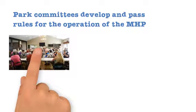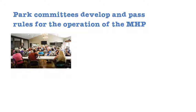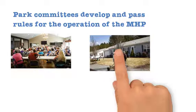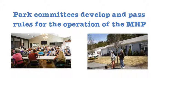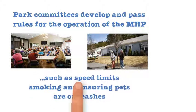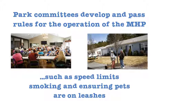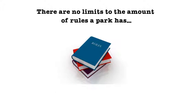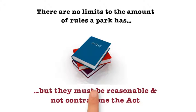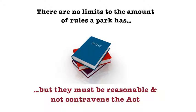Manufactured home parks may have a park committee that develops and passes rules for the operation of a park, such as speed limits, smoking, and ensuring pets are on leashes. There are no limits to the amount of rules a park may have, but they must be reasonable and they must not contravene the act.